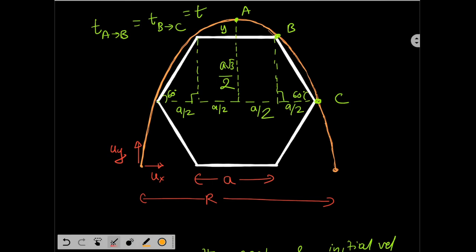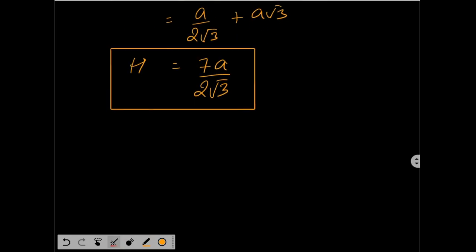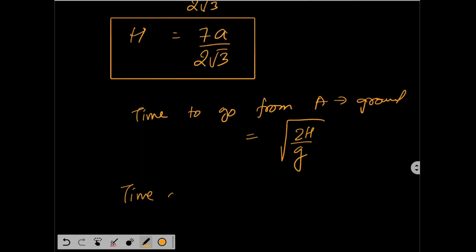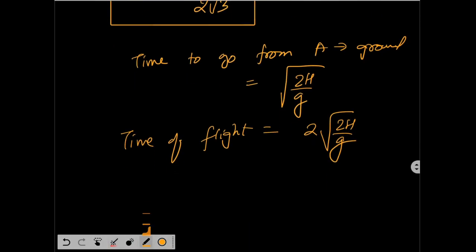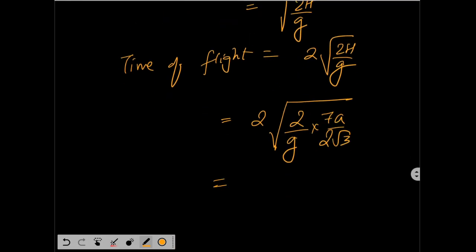Now we can find the time of flight — the time taken to cover the full height from A up and back to the ground. Time of flight equals 2·√(2H/g), where H = 7a/(2√3). This gives time of flight = 2·√(7a / (g√3)). This is your time of flight.